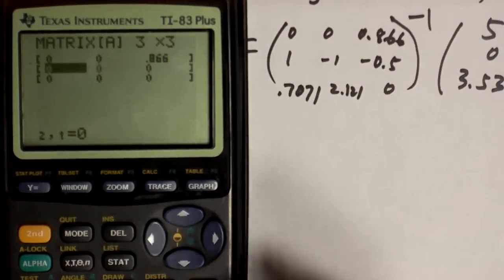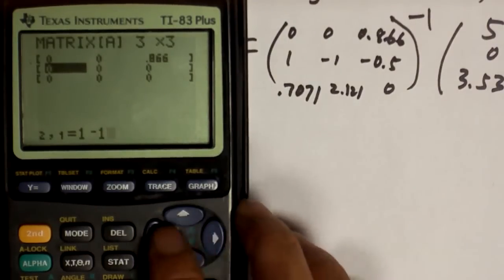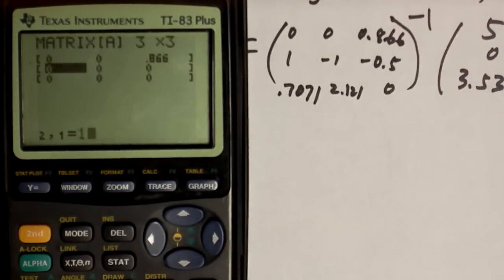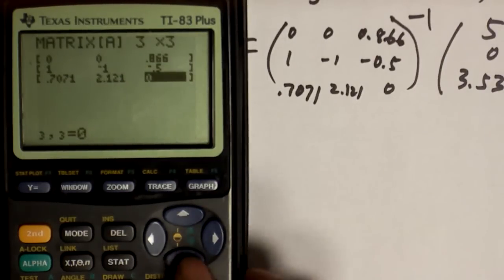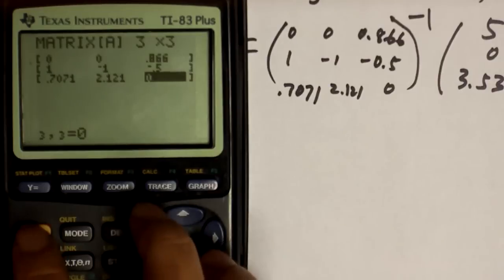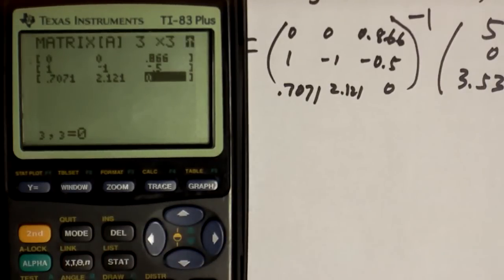And on the next line, it's 1, enter, negative 1, enter, negative 0.5, enter. And the third line is 0.7071, enter, 2.121, enter. And that's it. So, we have our very first matrix, matrix A ready.